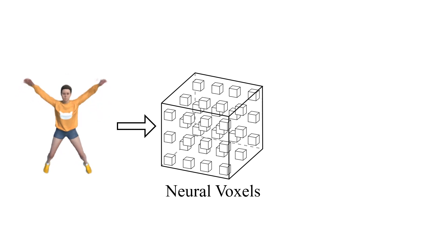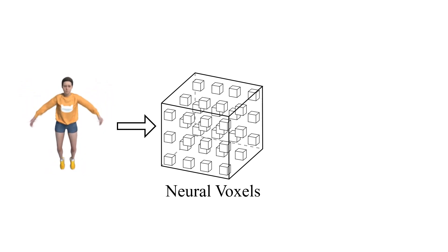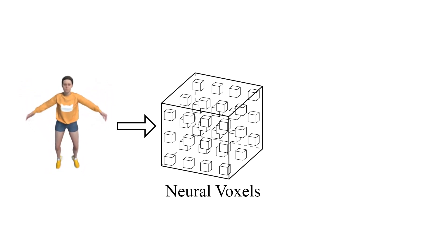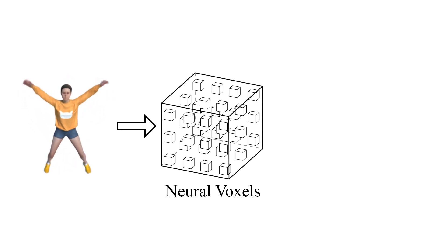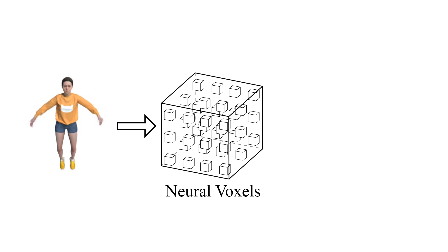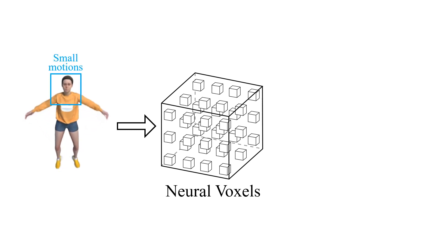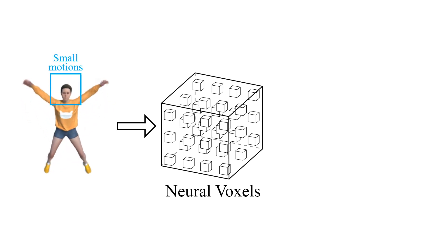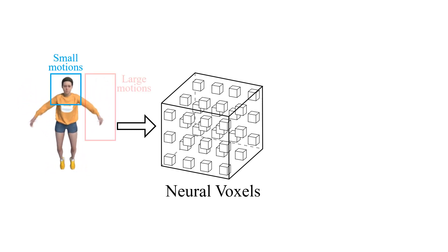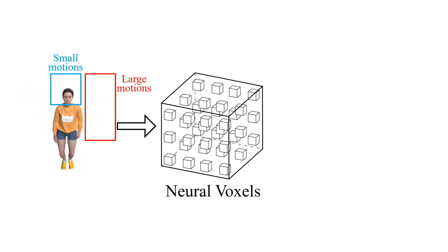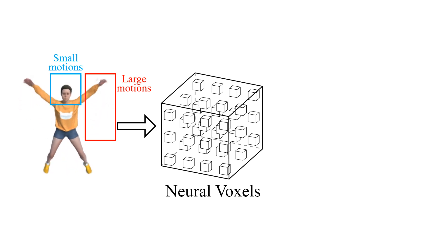The biggest challenge for modeling dynamic scenes is that they involve complex point motions. For a person doing jumping jacks, points surrounding the head are moving in a small region. However, the arms are moving with a drastic trajectory.